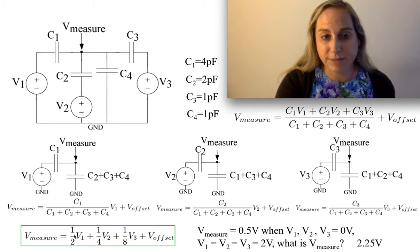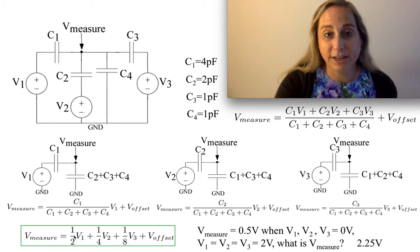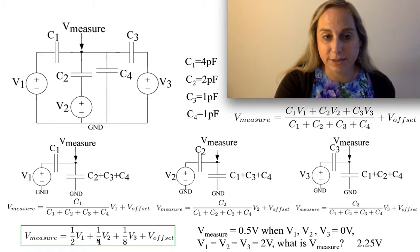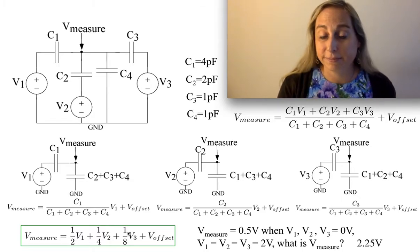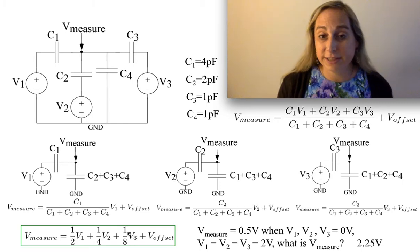4 over that, the ratio gives me a half. If I look at it for C2, the ratio is a quarter. And for C3, the ratio is 1 eighth. And so I can imagine having this kind of structure.